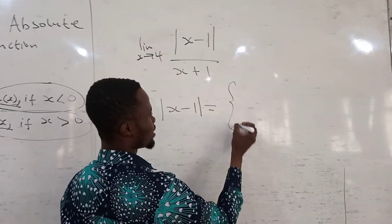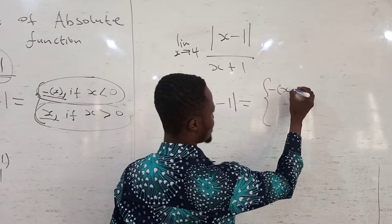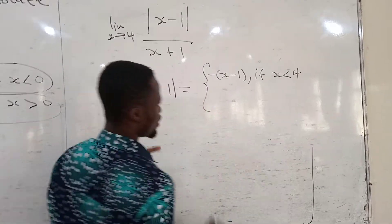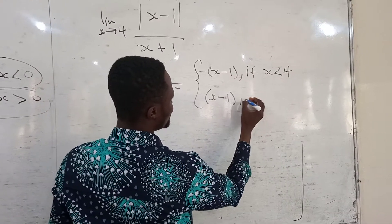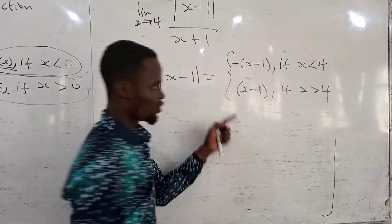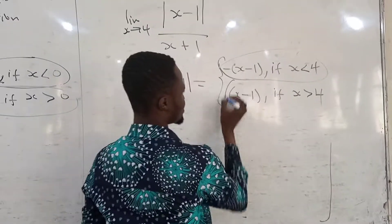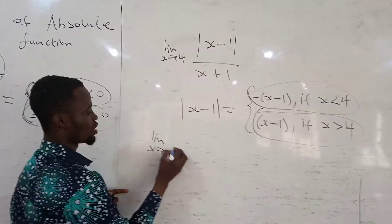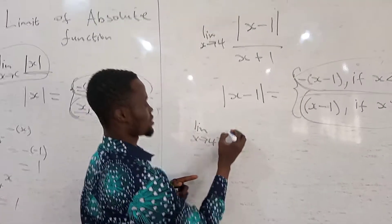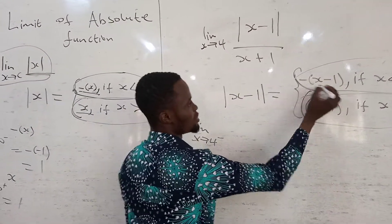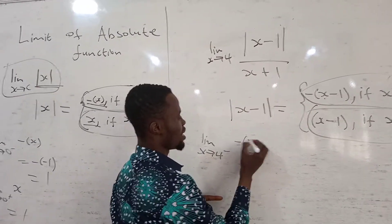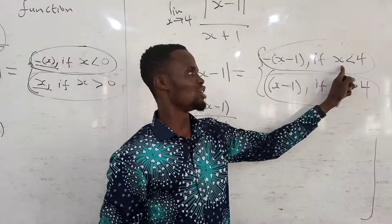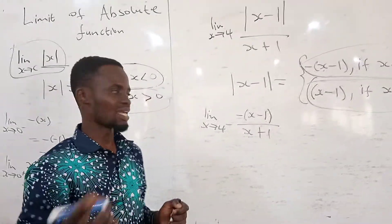When I do so, I get: absolute value of x minus one equals negative (x minus one) if x is less than four, and positive (x minus one) if x is greater than four. For the left-hand side, I get the limit as x goes to four minus, then I substitute negative (x minus one) in the numerator, all divided by x plus one. The condition says I choose a number less than four, so I choose 3.9.